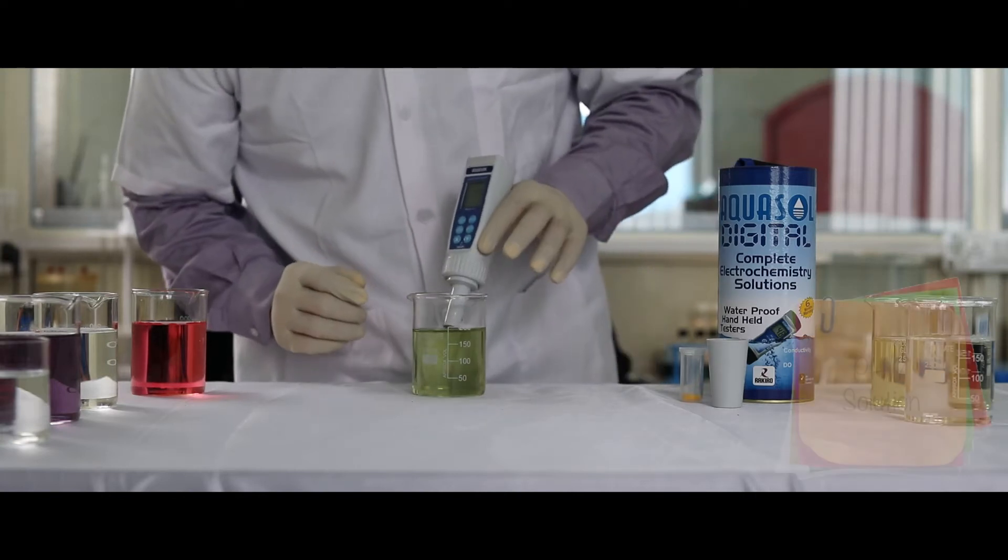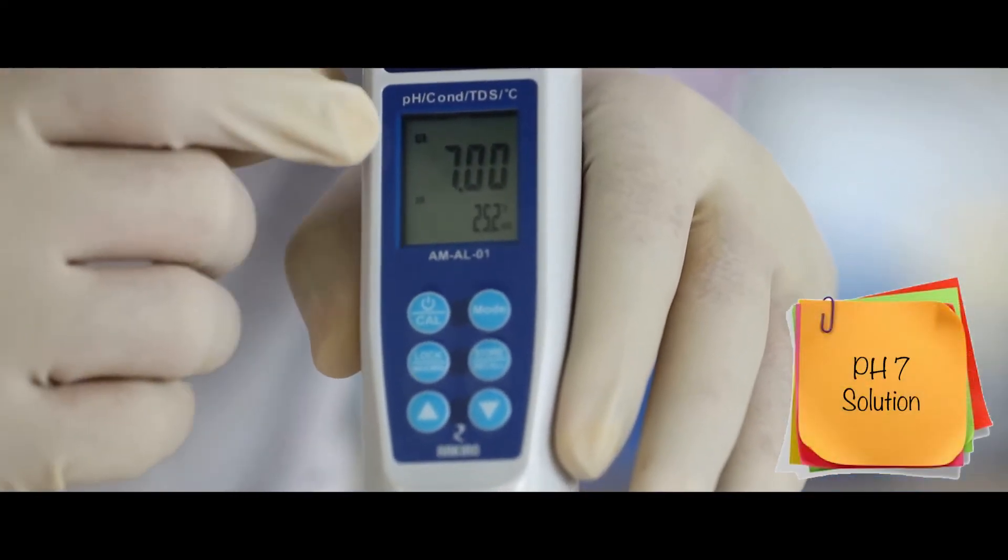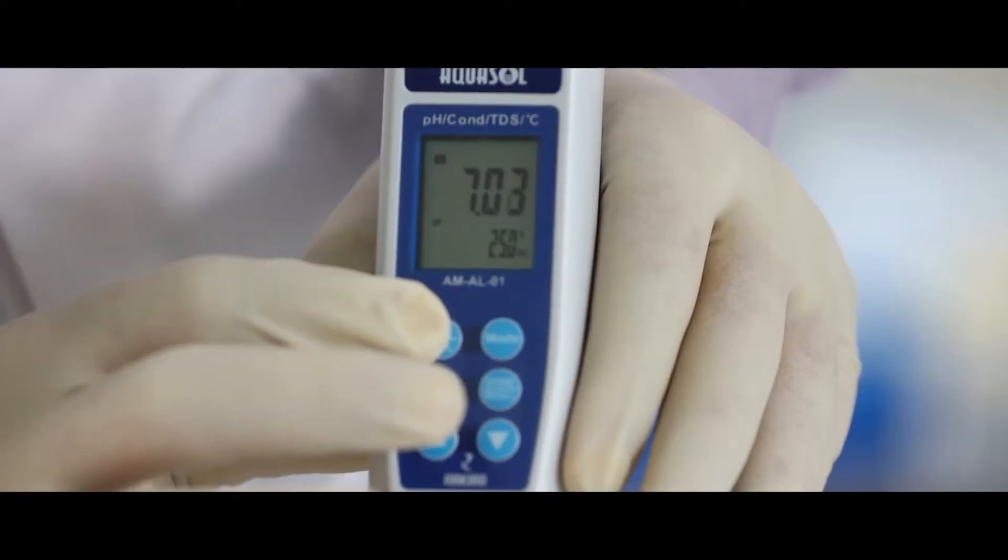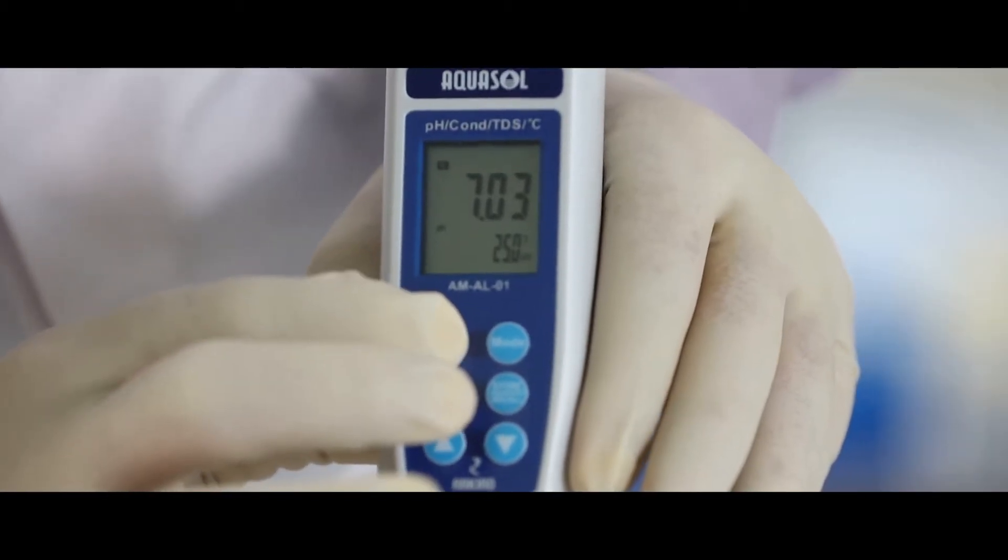Calibration of pH. Dip the electrode in the standard pH 7 solution. Stir for a stable reading, then press CAL key to calibrate.